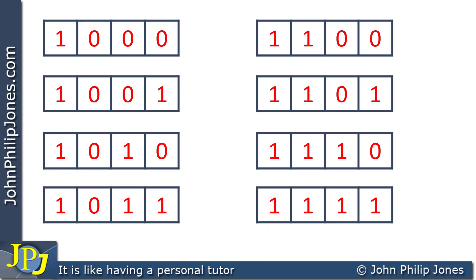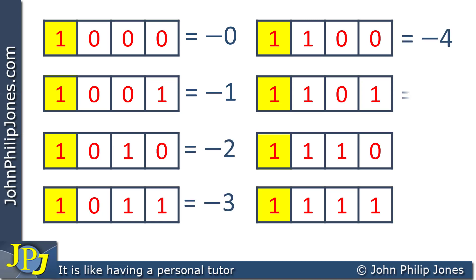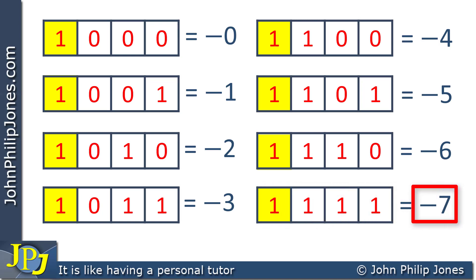On this slide we have the rest of the nibble values. Considering the sign bit position highlighted in yellow, we can see that all of these represent negative values. The first one is minus zero — the sign means negative and the magnitude bits are all zero. The next is minus one, then minus two, and continuing we go as far as the last one where the sign is negative and the magnitude is 7, giving us minus seven.